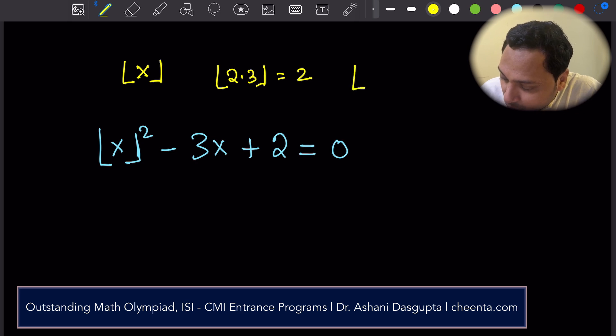Similarly, the integer part of negative 3.1 is negative 4. Negative 4 is the largest integer smaller than negative 3.1, right? So integer part of x means this.